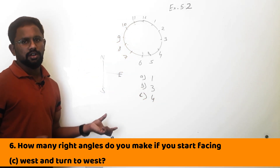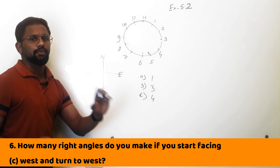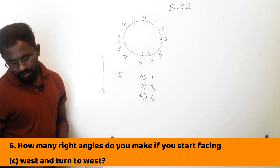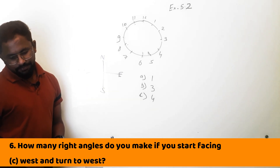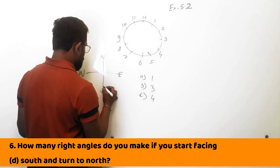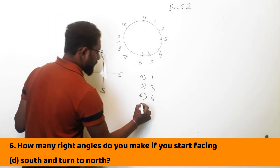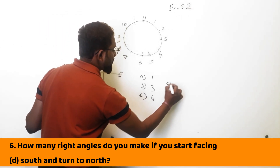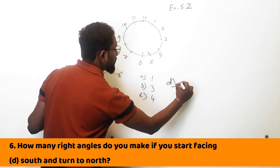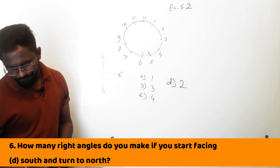In a complete revolution there are 4 right angles. D part: south and turns to north — either this way or this way. In D part you are making 2 right angles.